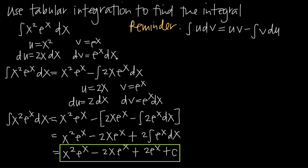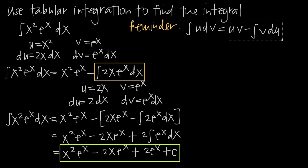The remaining integral is a little simpler — instead of x squared, we have a first-degree x variable — but we still have to use integration by parts a second time. So we say u is 2x, dv is e to the x dx. We take the derivative of u and get du equals 2 dx. We take the integral of dv and get v equals e to the x. Then we use these values in the right-hand side of the integration by parts formula to replace just this integral.